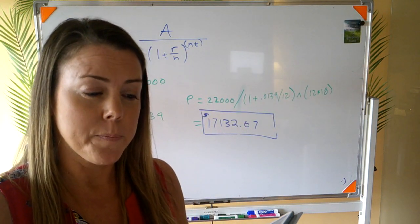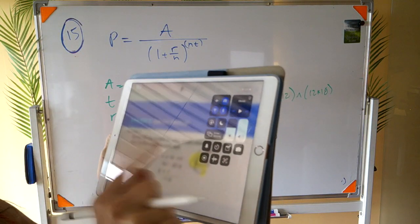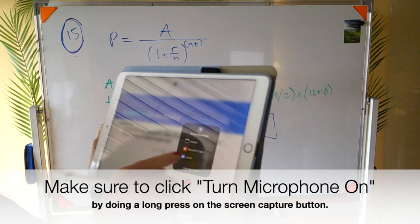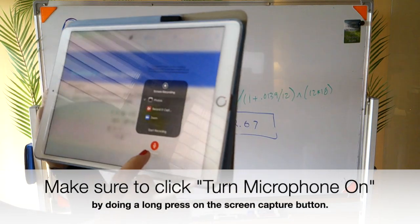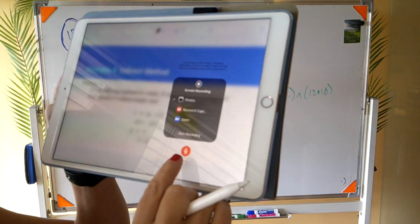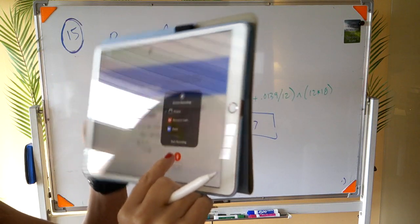So I use just the iPad features. So if you come up here into your widgets, now it's not a default so you have to hold down on the screen capture button. And then if you notice down here it says microphone on, so as it's screen capturing it actually has the microphone on and it records my voice.